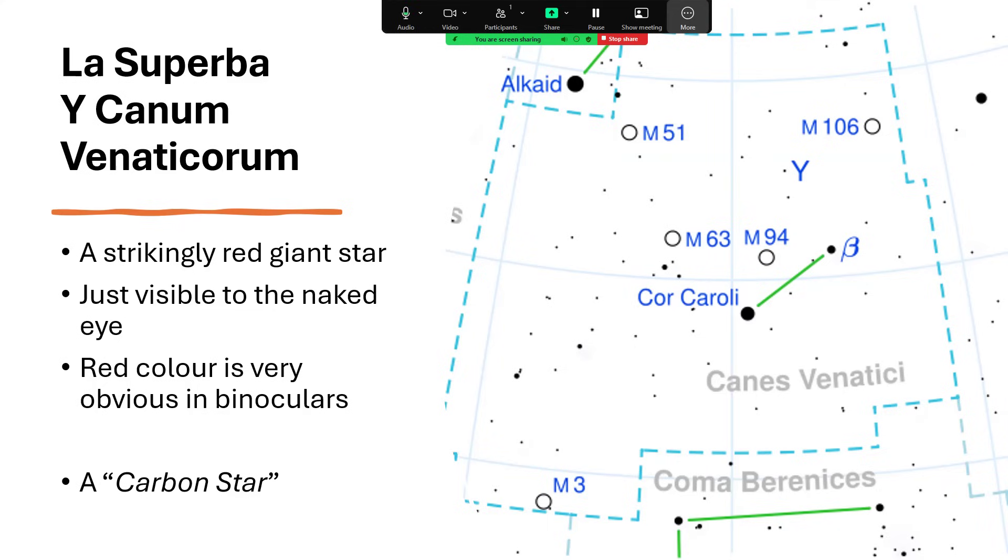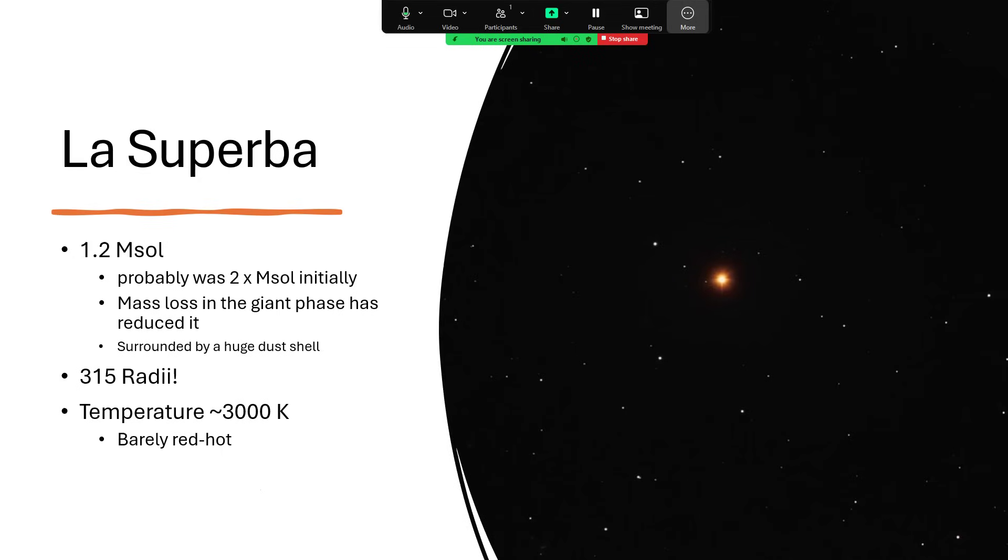La Superba is labeled as Y in the catalog, Y Canum Venaticorum. It's an amazing color, a very striking red color, only just visible to the naked eye. It's not particularly bright, but with a telescope it's worth going and tracking it down while you're surfing around the galaxies of this area. You can see the color even with a pair of binoculars. This is a carbon star, and it's the carbon nature of it that gives us the very intense red color.